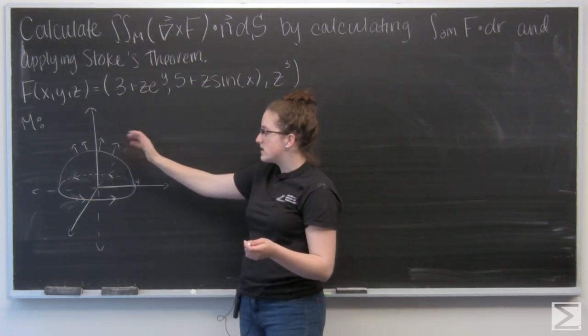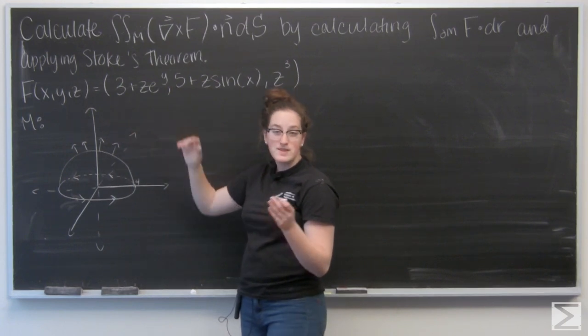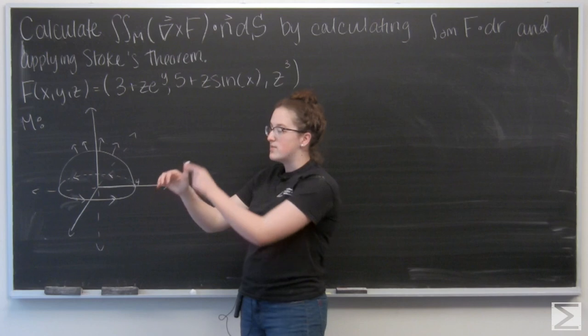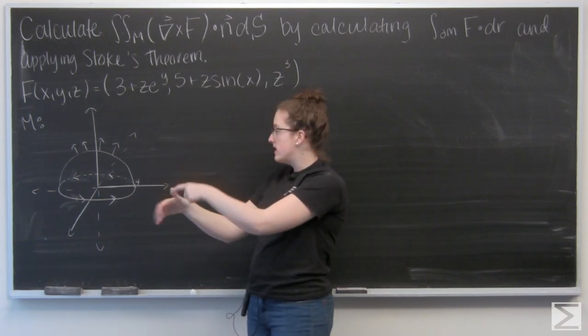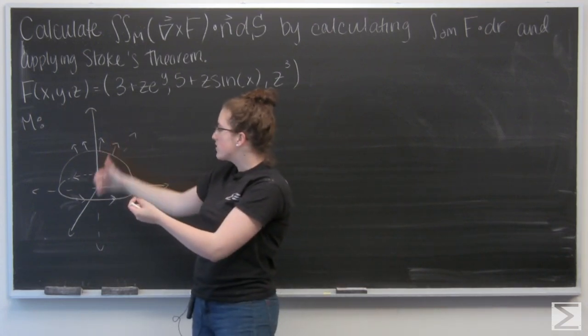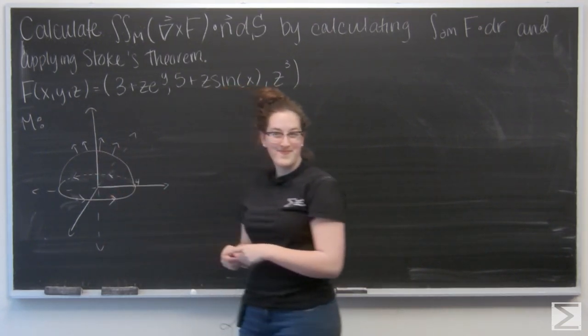So M is a hemisphere, the top half, centered at the origin of radius 4, oriented upward. So I'm going to use the right-hand rule and my thumb is the orientation upward and then my fingers curl around to show me the orientation of the boundary. So here they curl to be counterclockwise.